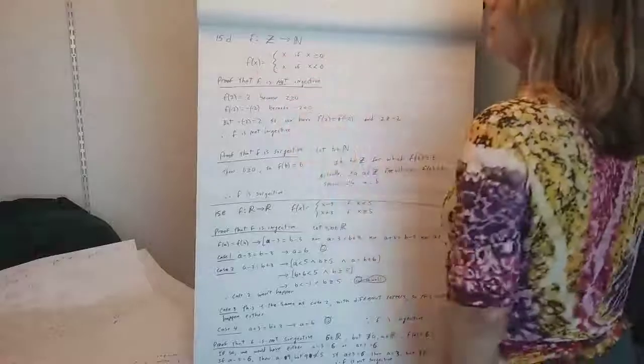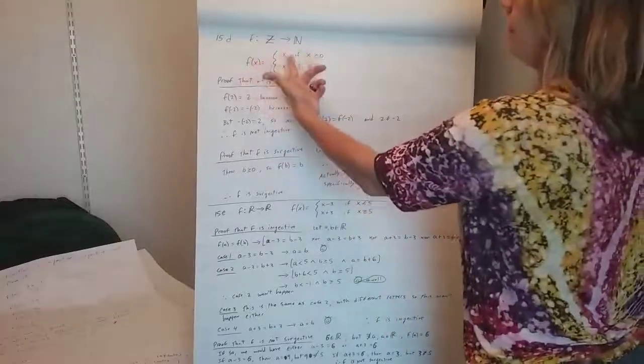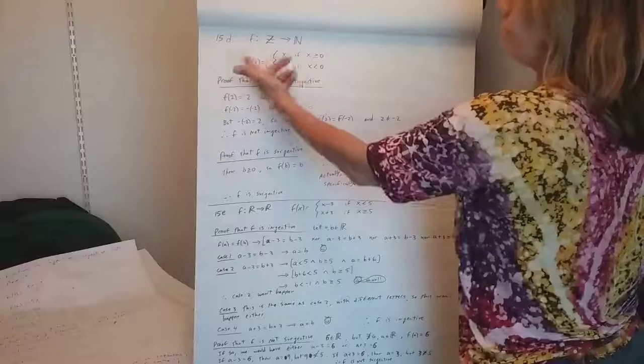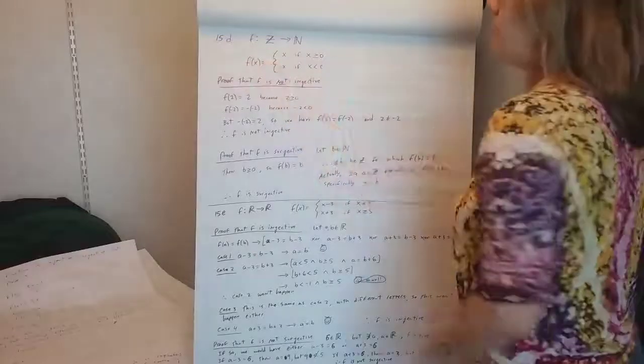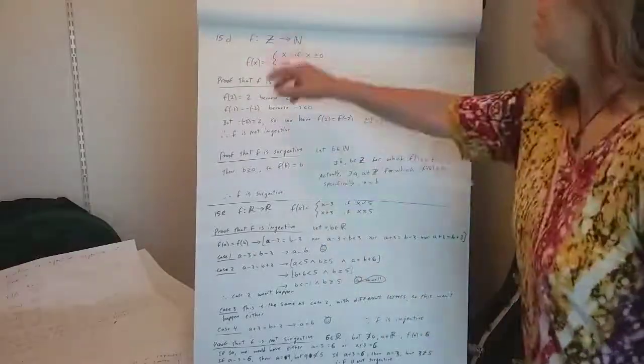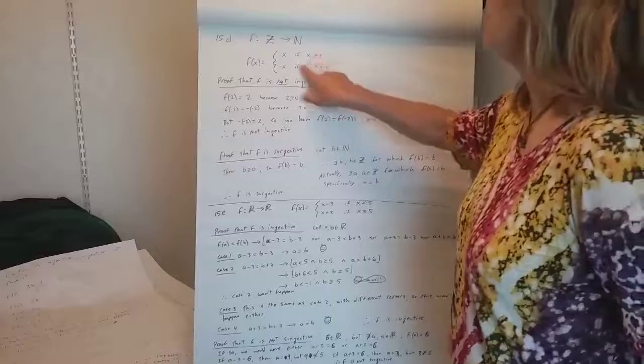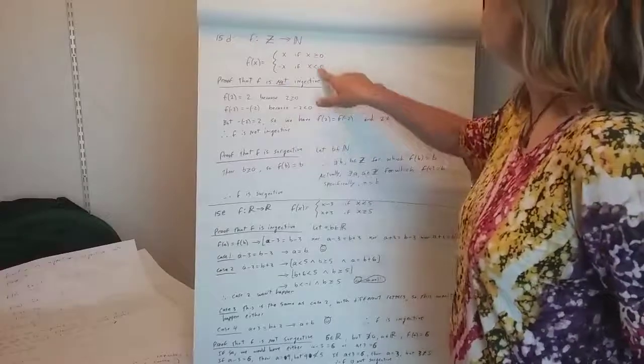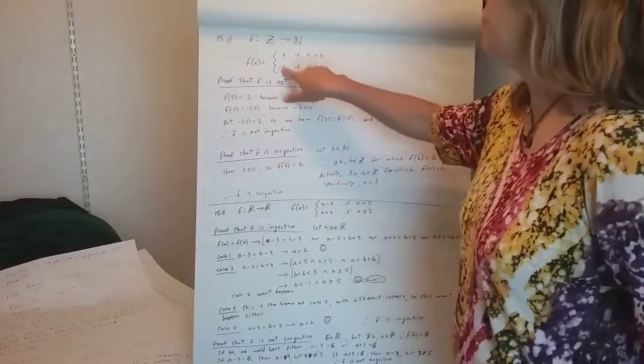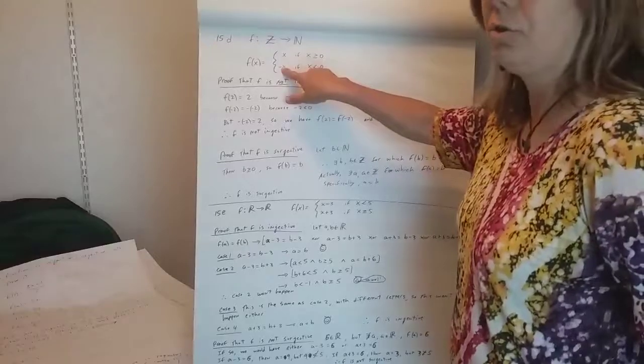So this is basically absolute value, right? f of x is x if x is positive or zero, and negative x if x is negative. So like f of 2, since 2 is positive, that would be 2, whereas f of negative 2, negative 2 is here, so it would be negative negative 2, which is 2.